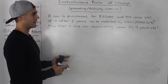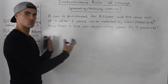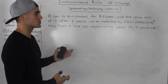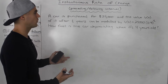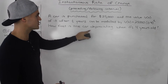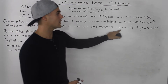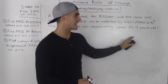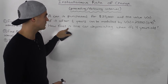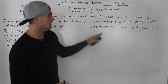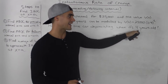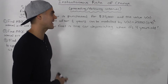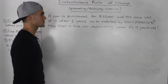An average rate of change is always between two points. An instantaneous rate of change is always at one point. And they're asking how fast is the car depreciating when it's four years old? So they're asking what's the speed of the car depreciating at a specific point in time. So we're dealing with instantaneous rate of change.